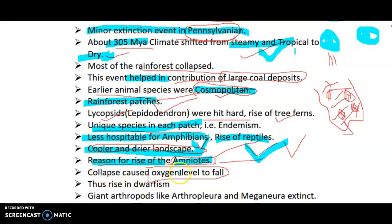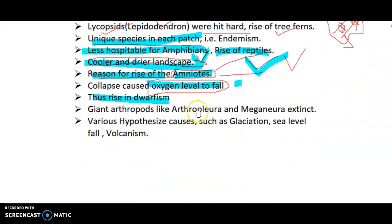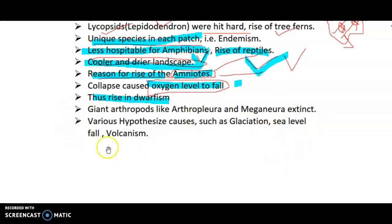The collapse caused oxygen levels to fall, leading to a rise in dwarfism — as oxygen falls, body size shrinks. Giant arthropods such as Arthropleura and Meganeura became extinct due to low levels of oxygen. The hypothesized causes of the Carboniferous Rainforest Collapse include glaciation, sea level fall, and volcanism.